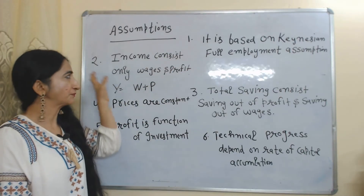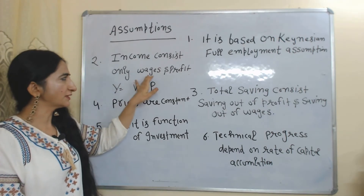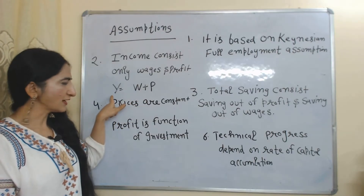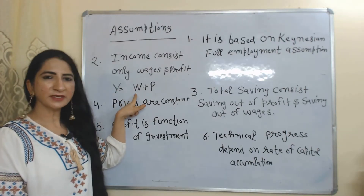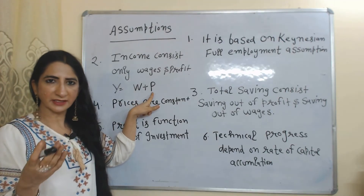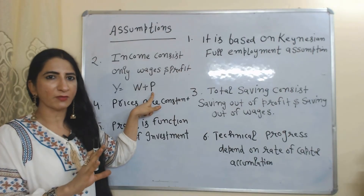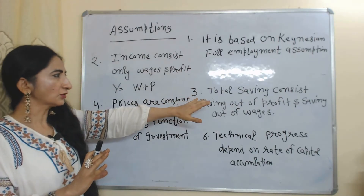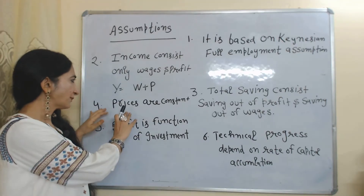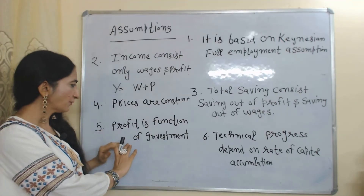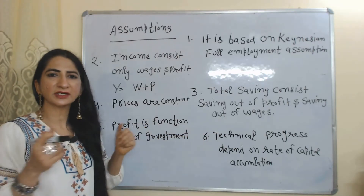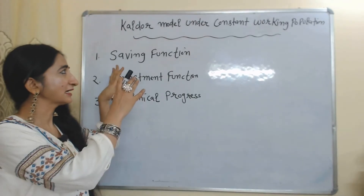This model is based on the condition of full employment. Income consists only of wages and profit, that's why Y is equal to W plus P — Y means income, W means income earned by labor in the form of wages, P means income earned by capitalists in the form of profit. Total saving consists of saving out of profit and saving out of wages. Prices are constant, profit is a function of investment, and technical progress depends on the rate of capital accumulation.